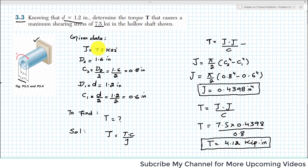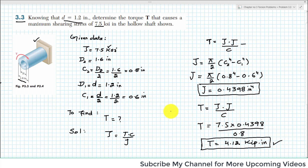Because we used 7.5 KSI without writing 10 raised to power 3, when you solve this the answer will be in kips, and as it is torque, it will be kip·inch. So this was an easy problem and that is the solution. I hope you have enjoyed the video. Thank you.